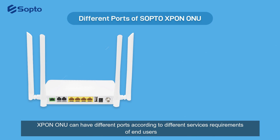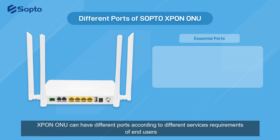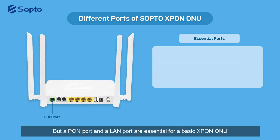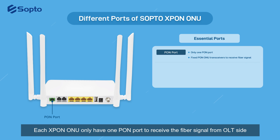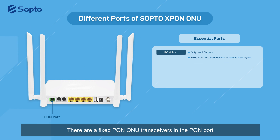X-PON ONU can have different ports according to different service requirements of end-users. A PON port and a LAN port are essential for a basic X-PON ONU. Each X-PON ONU has only one PON port to receive the fiber signal from the OLT side, with a fixed PON ONU transceiver in the PON port.